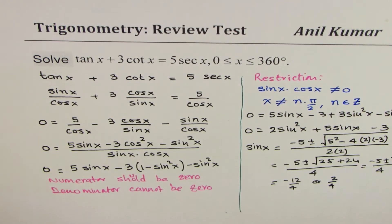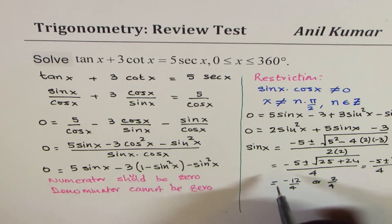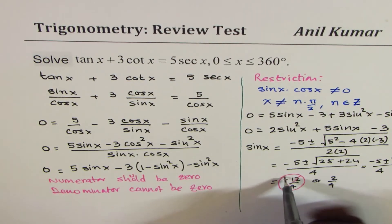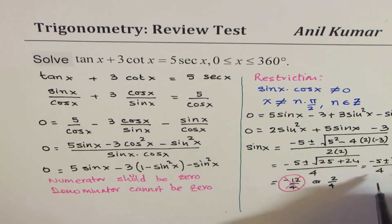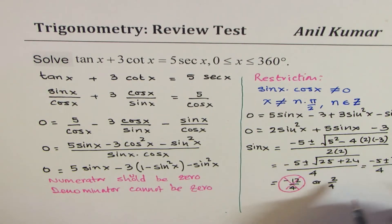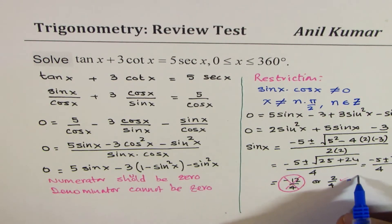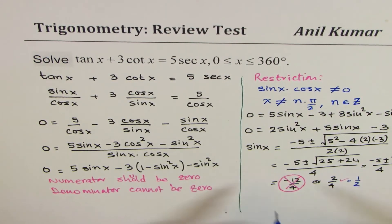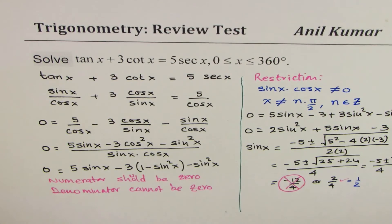So that means this value is not valid, which is 3, which is not valid. Sine is within plus and minus 1. However, this is okay. So that means one of the solutions is, in fact, there is only one solution. We are looking for sine x equals to half.